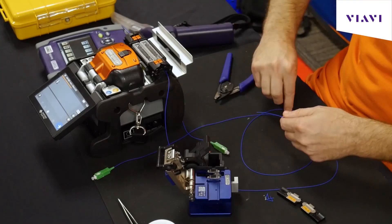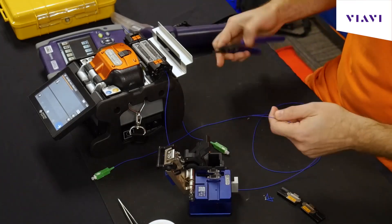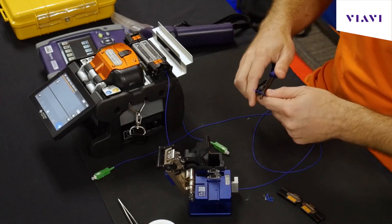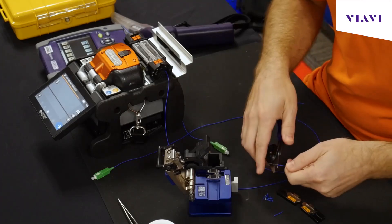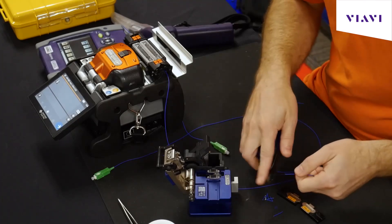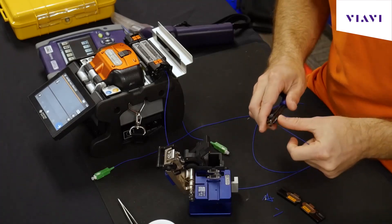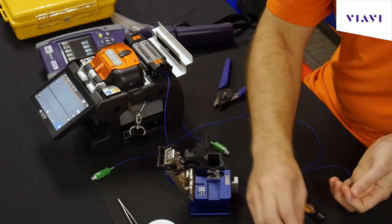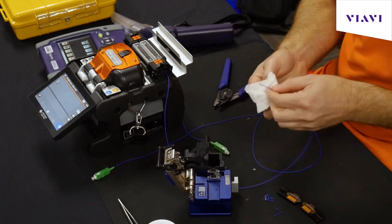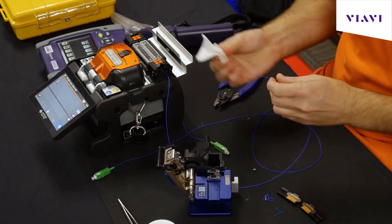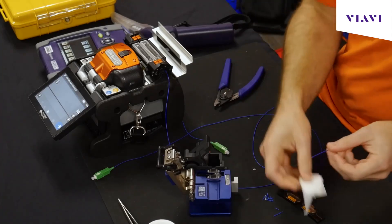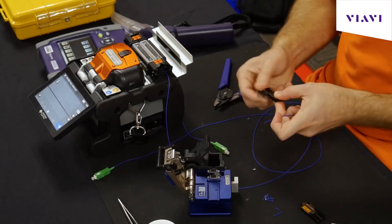Now that we've already understand what we're doing here, I'm just going to keep moving. Again, I'm going to expose the buffer cladding and core, take the buffer off, clean it, load it into my insert and cleave.